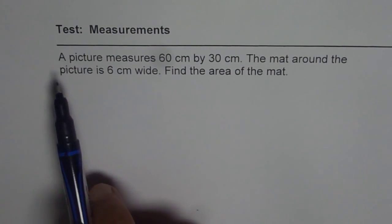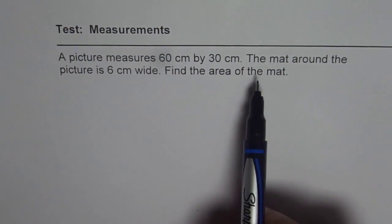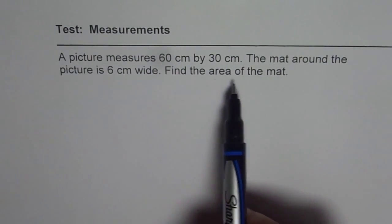Here the question is: a picture measures 60 cm by 30 cm. The mat around the picture is 6 cm wide. Find the area of the mat.